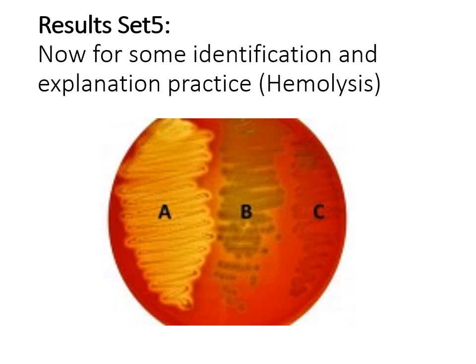The last result set shows a single plate with three different bacteria displaying three different hemolytic abilities. You may encounter questions about the hemolytic abilities or the possible identification of the bacteria present. If you have any questions interpreting any of these five sets of results, contact me and I'll help clarify.